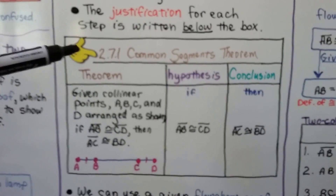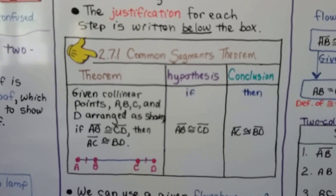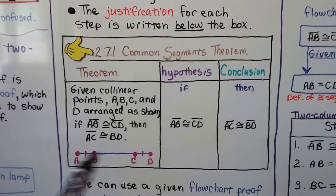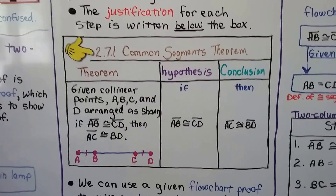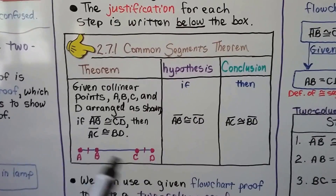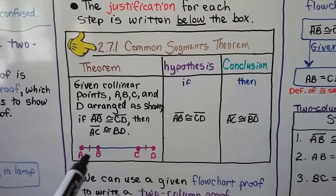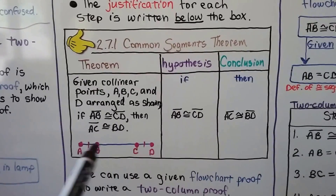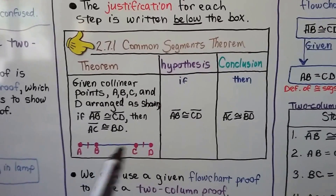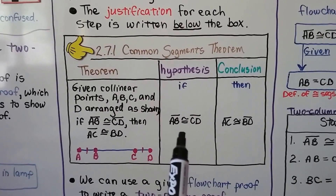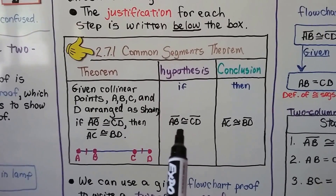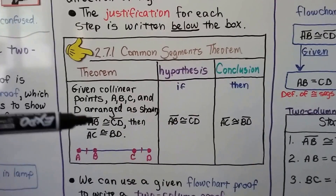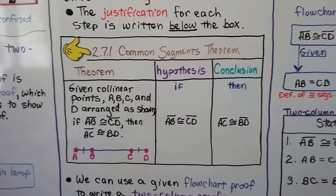You should probably write this down — it's the Common Segments Theorem. Given collinear points — and remember, collinear means all the points are on the same line — we have A, B, C, and D arranged as shown. If segment AB is congruent to segment CD, then AC is congruent to BD. So we have our hypothesis, which says segment AB is congruent to segment CD, and our conclusion is AC is congruent to BD. That's the if and the then.